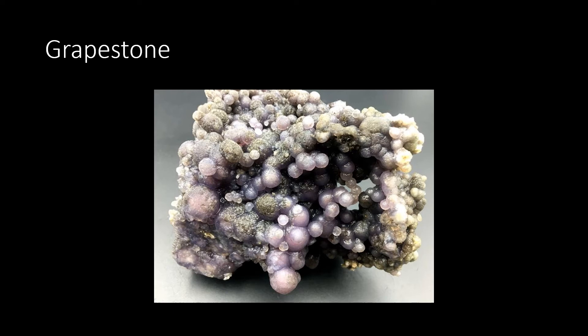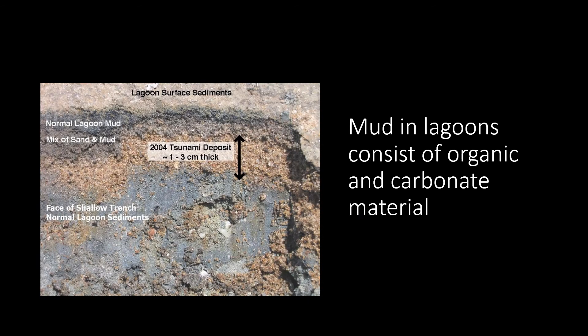Grapestones are also present — aggregates of grains cemented on the seafloor by micritic aragonite, generally forming in water nine meters or deeper, which could include a lagoon of a bigger reef. Behind the high-energy fore reef, many sediment deposits accumulate in the lagoon, including peloids, pellet mud, foraminifera sands, and coral sands made of corals and calcareous algae. The larger particles tend to be closer to the reef or farther out to sea, and finer material is closer to the shore.